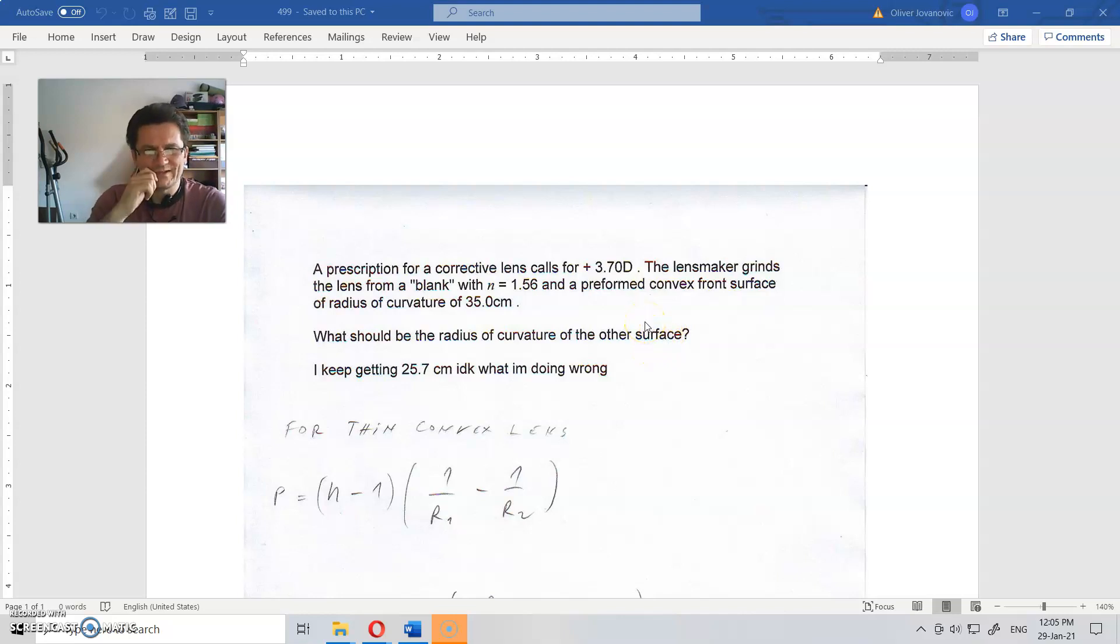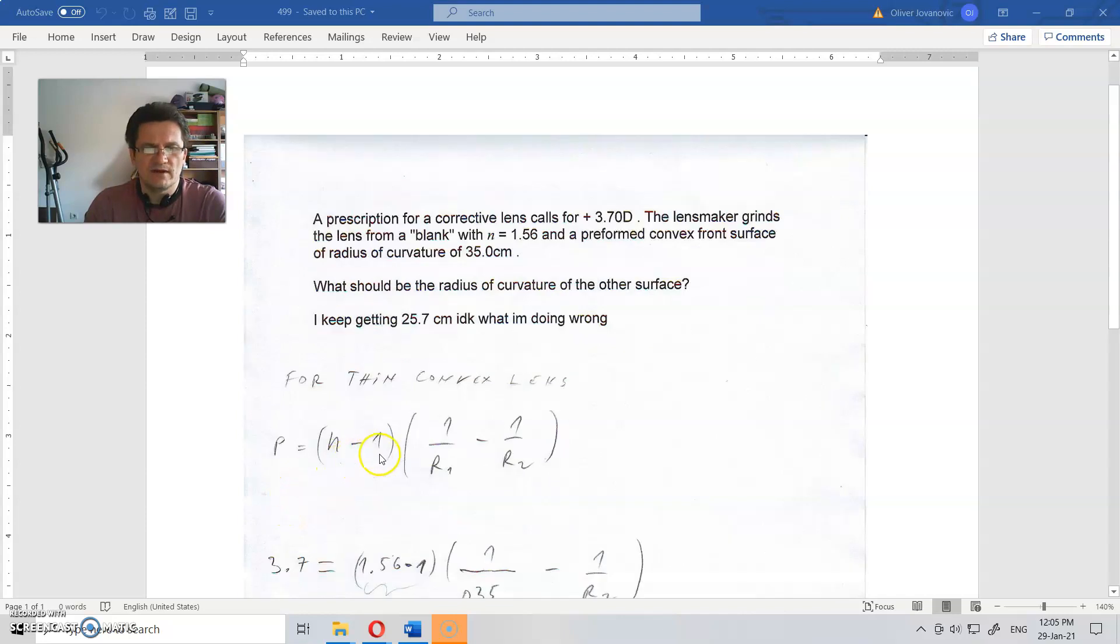I keep getting 25.7 cm and he does not know what is doing wrong. So for thin convex lens, P = (n - 1)(1/r1 - 1/r2).